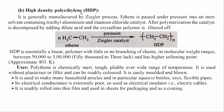B. High-density polyethylene (HDP). It is generally manufactured by the Ziegler process. Ethene is passed under pressure into an inert solvent containing triethyl-aluminium and titanium chloride catalyst. After polymerization, the catalyst is decomposed by adding dilute acid and the crystalline polymer is filtered off. HDP is essentially a linear polymer with little or no branching of chains. Its molecular weight ranges between 50,000 to 3 lakh and has a higher softening point of approximately 403K.